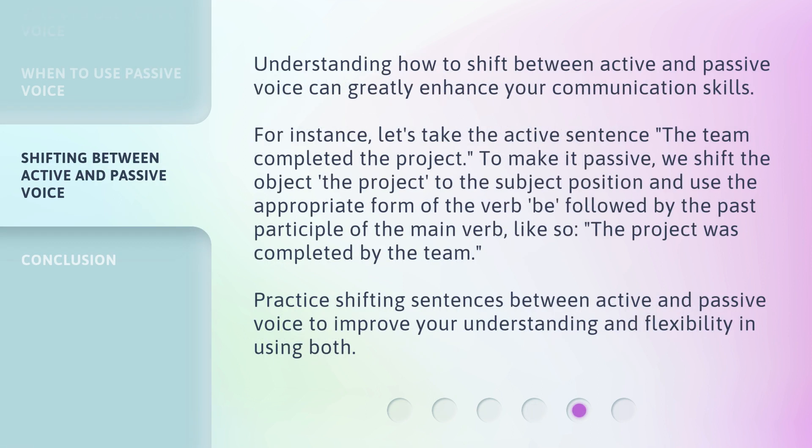Understanding how to shift between active and passive voice can greatly enhance your communication skills. For instance, let's take the active sentence, 'The team completed the project.' To make it passive, we shift the object, the project, to the subject position and use the appropriate form of the verb 'be' followed by the past participle of the main verb. Like so: 'The project was completed by the team.'